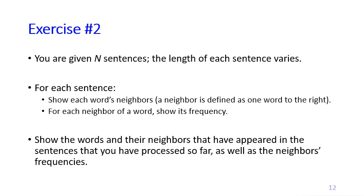In the second exercise, similar to before, you are given N sentences. For each sentence you must show each word's neighbors. A neighbor is defined as one word to the right. For example, in a sentence, the neighbors of a word 'S' would be 'well' and 'the', each with a frequency of one. Once you've processed a sentence, show the words and their neighbors that have appeared in all sentences processed so far, along with neighbor frequencies. Keep repeating these two processes until you've processed all N sentences.